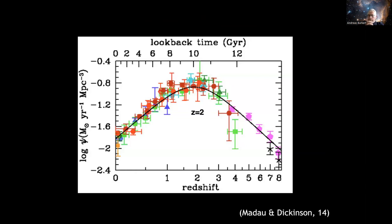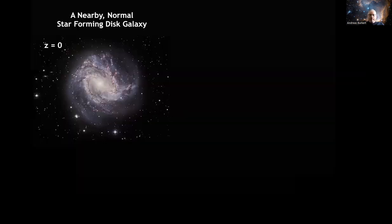I would like to focus on redshift two — cosmological redshift two. The reason is that this is the peak of star formation. Here you see the cosmic star formation rate as a function of cosmic redshift: it peaks at redshift two, three gigayears after the Big Bang. This is the time where most of the stars were created, the morphology of galaxies was set, and by that also the Hubble sequence. There have been substantial observations by Reinhardt Gensel and other groups, and some are understandable, but others are a puzzle.